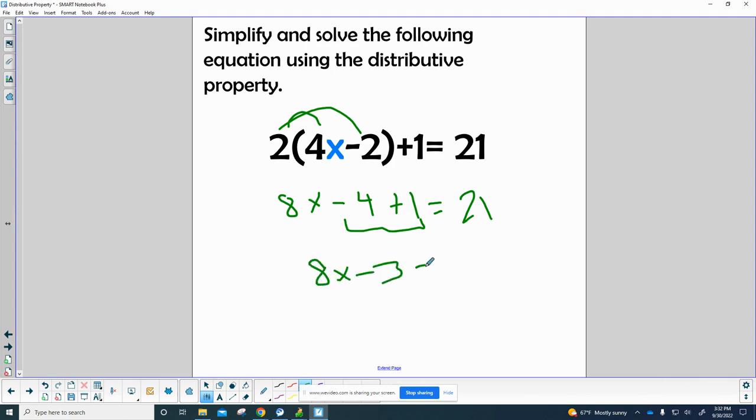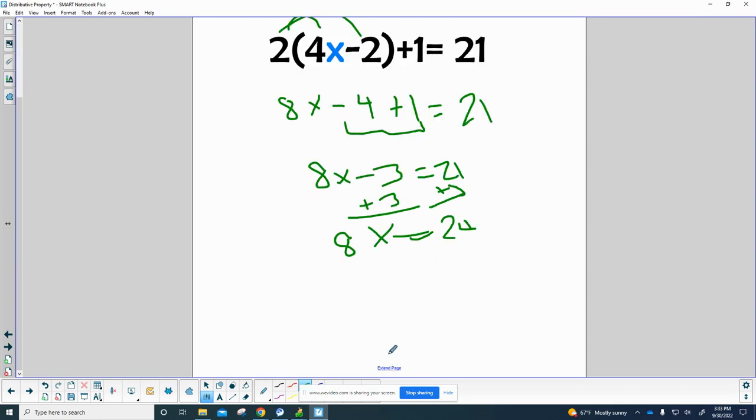We need to move the 3 to the other side, so we add 3. We get 8x equals 21 plus 3, which is 24. Need to be careful, I'm getting a little bit sloppy here. I've got to finish off by dividing by 8 on both sides. Then I get x equals 3.